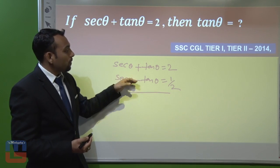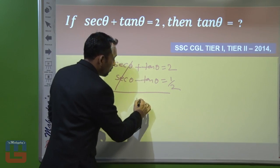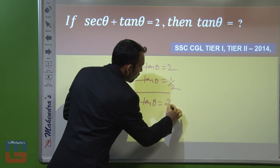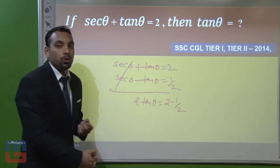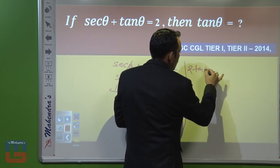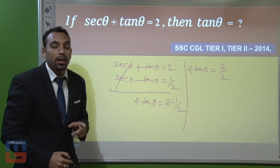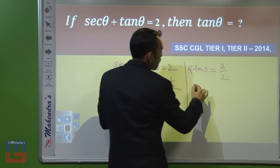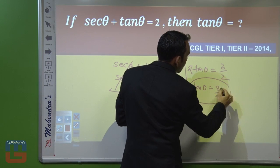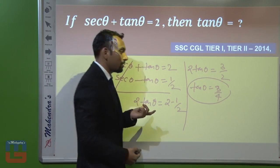We have to find the value of tan θ, so we subtract the second equation from the first: (sec θ + tan θ) − (sec θ − tan θ) = 2 − 1/2. This gives 2 tan θ = 3/2, so tan θ = 3/4. The answer to this question is tan θ = 3/4.